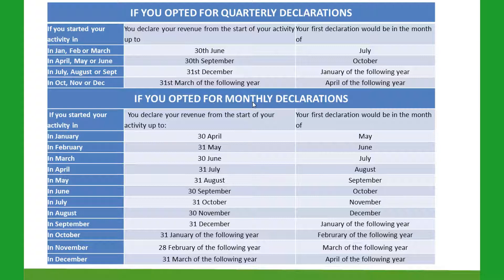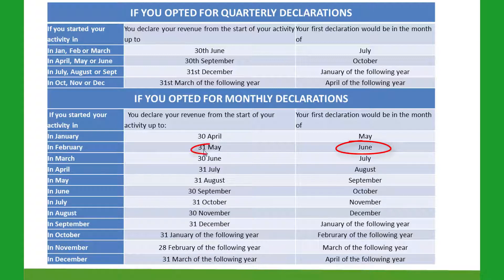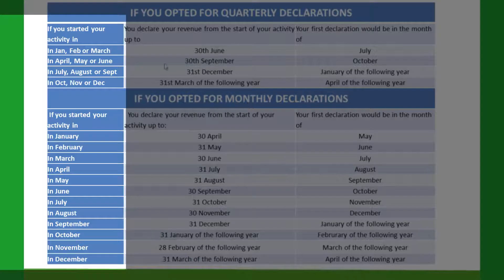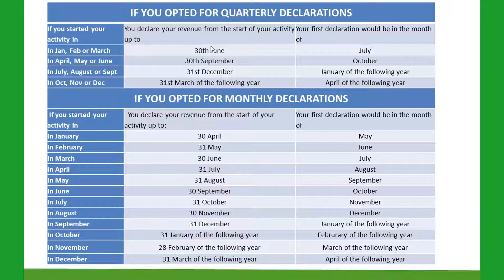For those of you who have opted for monthly declarations, you choose the month in the left-hand column when you set up your business. For example, if you set up in February, you would not make your first declaration until June, but it would cover February to the end of May. So the first thing to look at is whether you opted for quarterly or monthly declarations, then look in the left-hand column to see when you set your business up — the dates will tell you when you have to declare and what you have to declare.